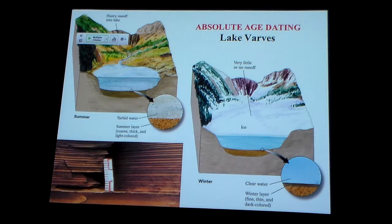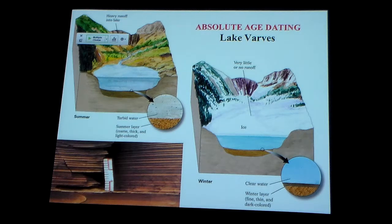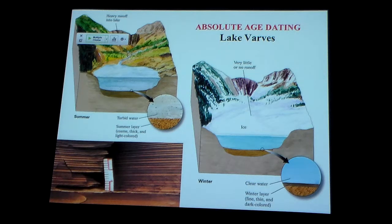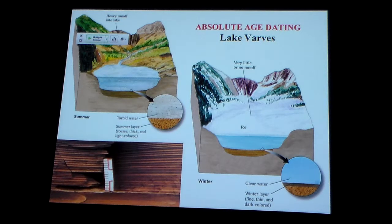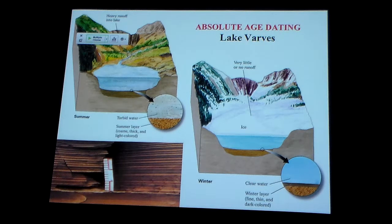During the winter, everything kind of freezes up again, including the surface of the lake. The only thing getting into the lake is basically the clays that were already in the water held in suspension. As everything quiets down and freezes over for the winter, those clays settle out of the water and make a thin layer on the bottom of the lake. Those tend to usually be a little lighter color.